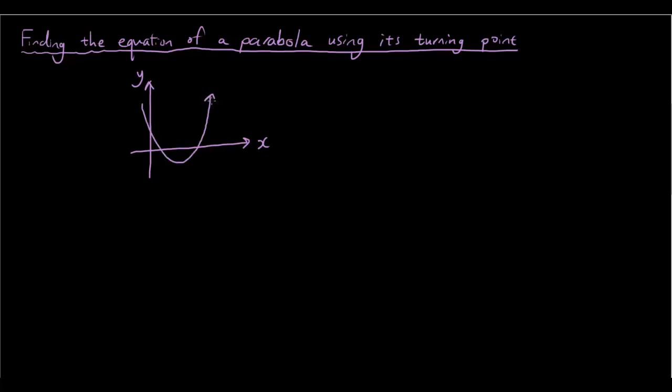And this time all we are going to give you is the turning point and one other point. So let's say the turning point of this parabola occurs at 3 and negative 2. So the x axis is 3 and the y axis is negative 2.